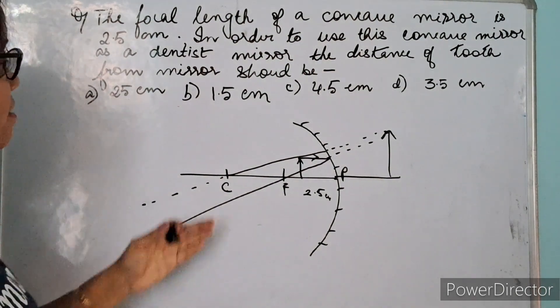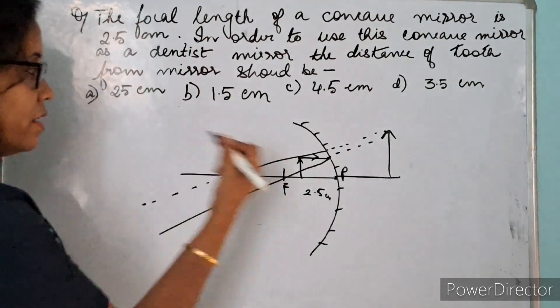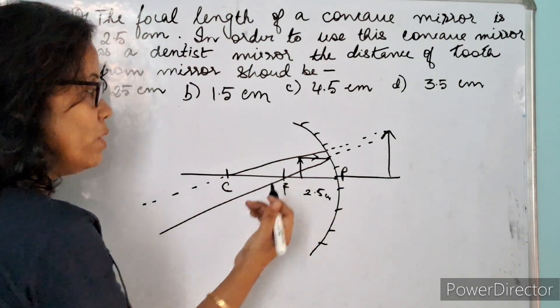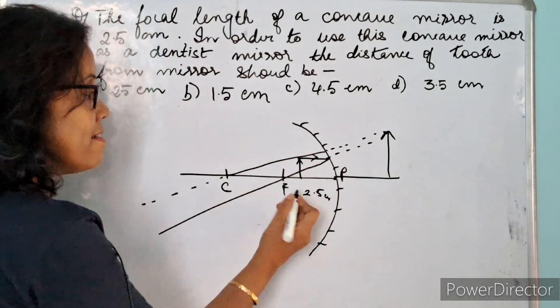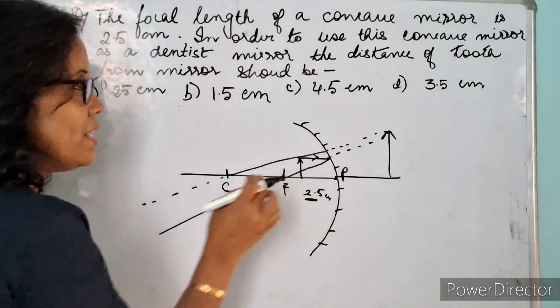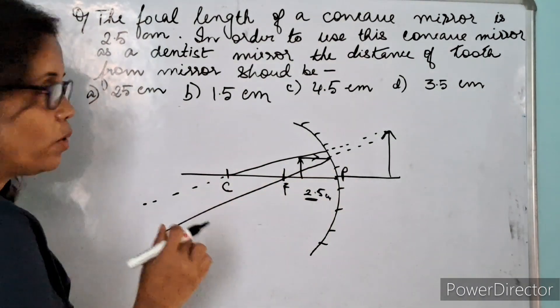Now we are asked what is the distance of the tooth from the mirror. The distance of the tooth from the mirror will definitely be between the pole and the focus, that means it will be less than 2.5. Since the focal length is 2.5 centimeter, the object has to be placed at a distance which is less than 2.5 from the pole.